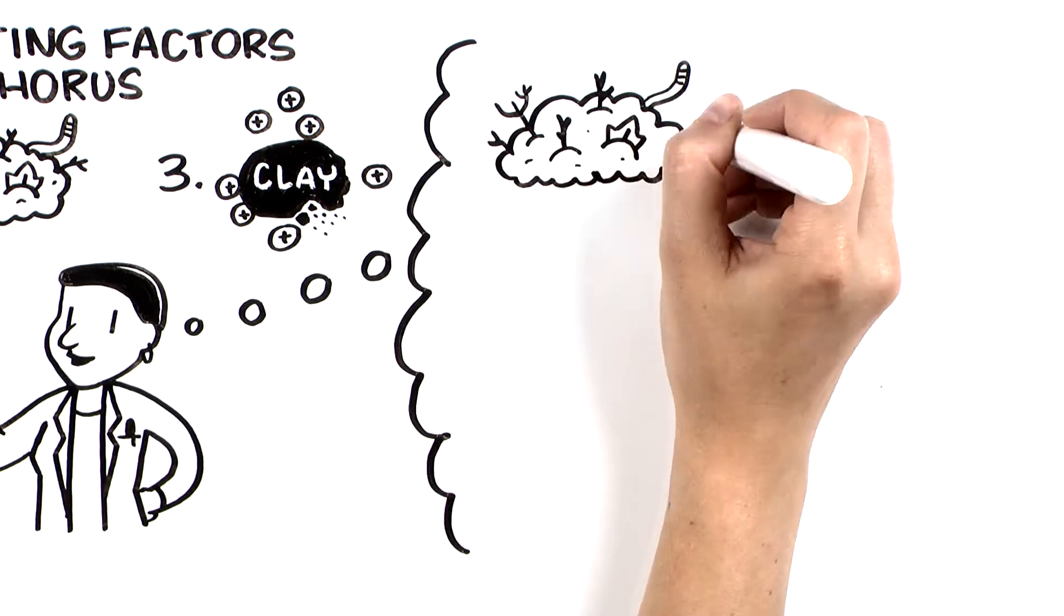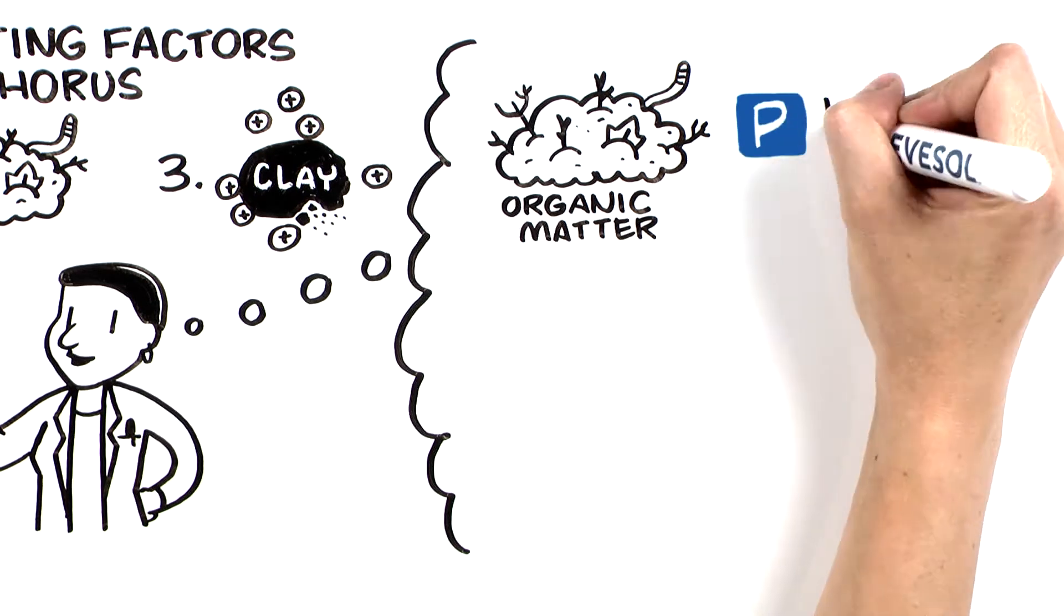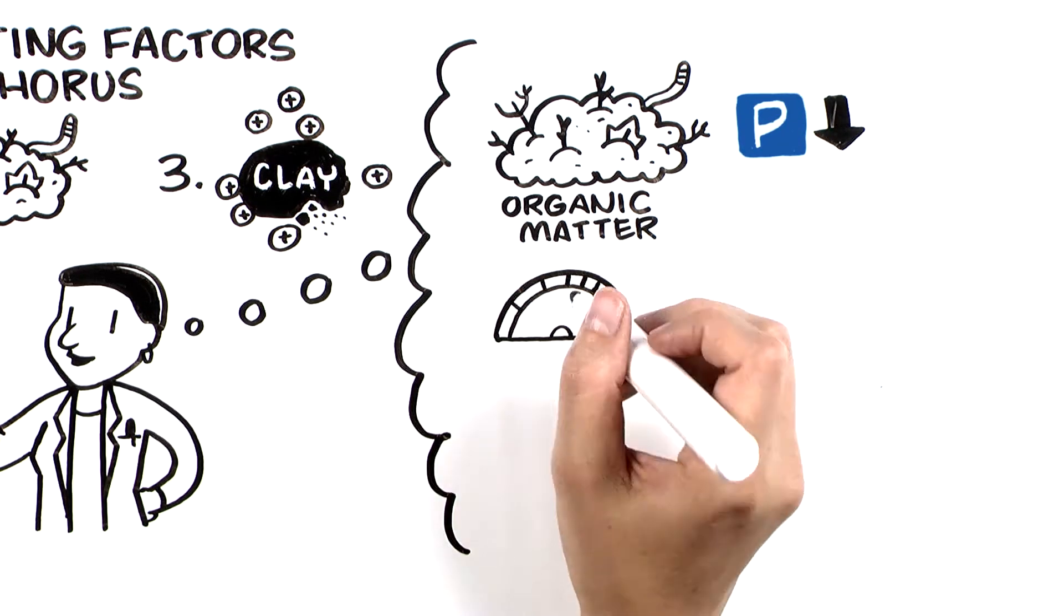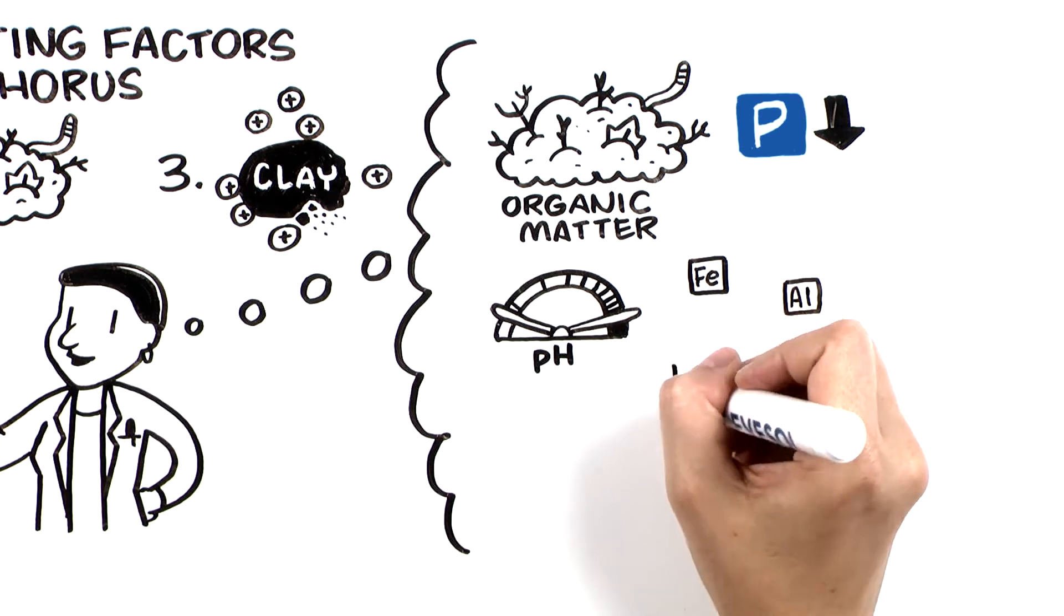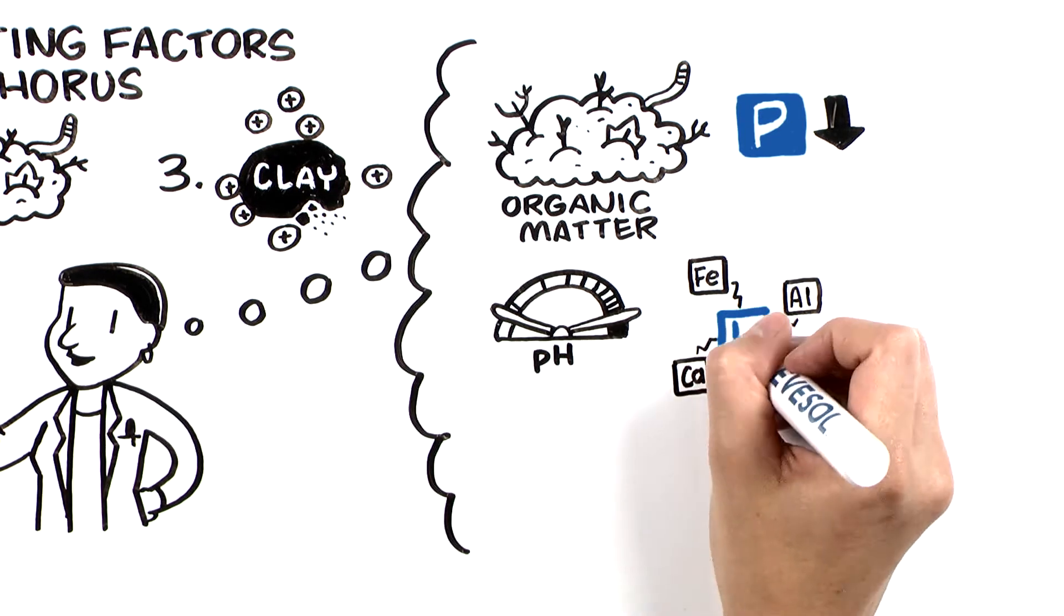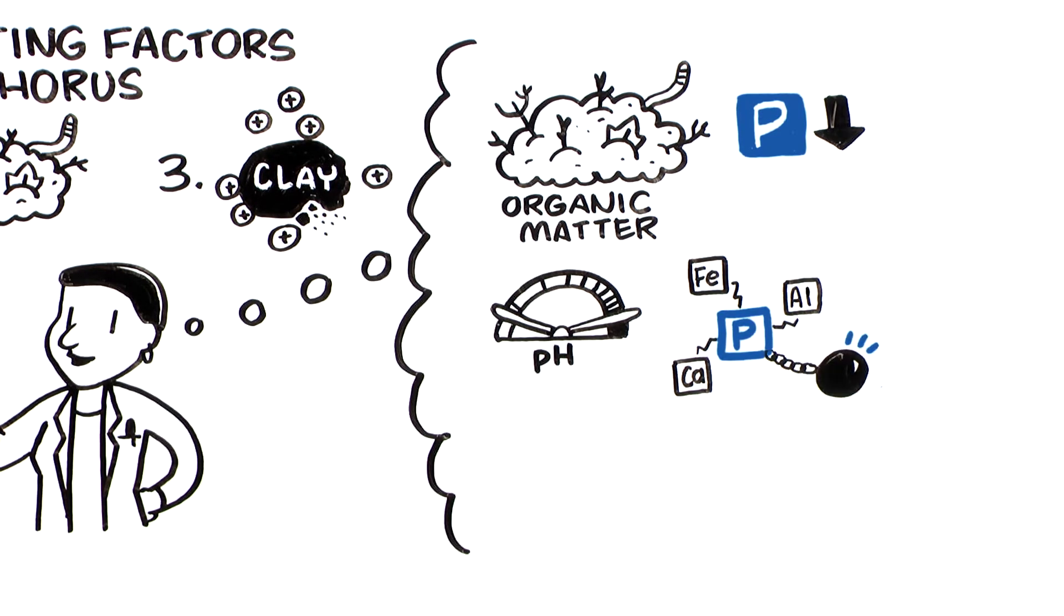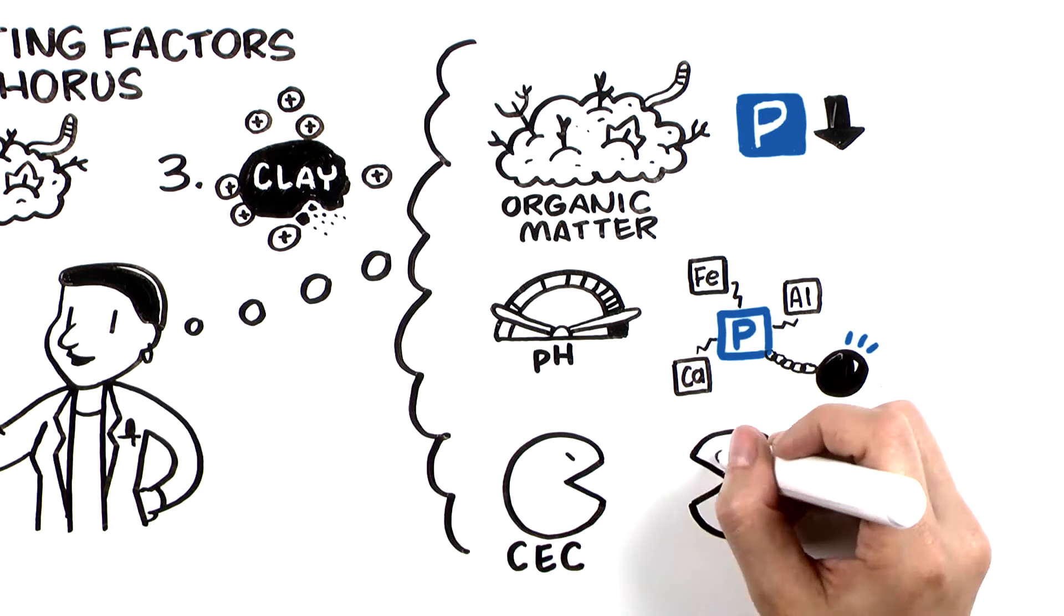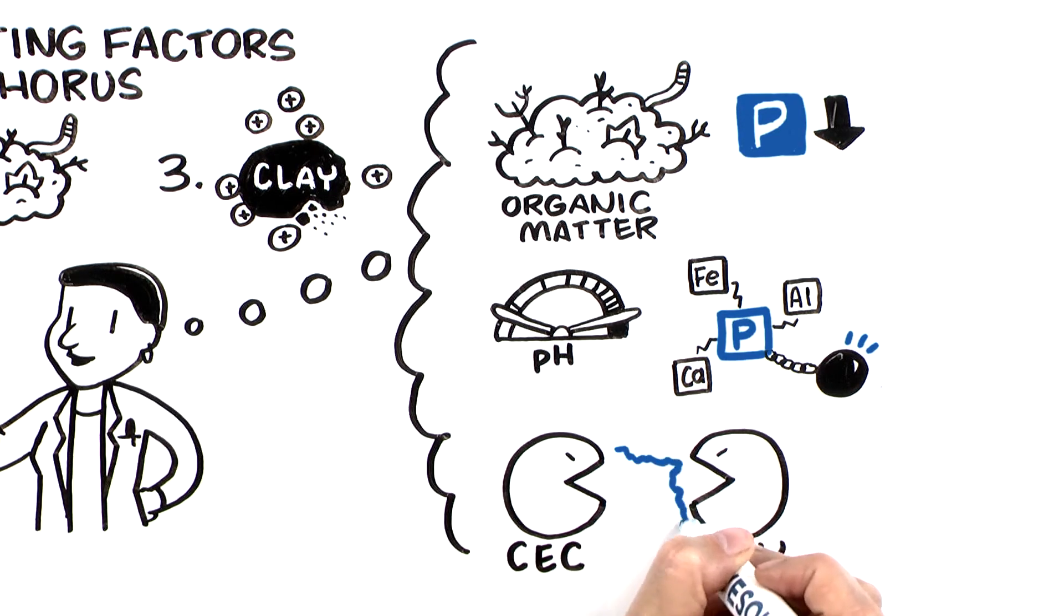Organic matter levels that are low can limit the rate of phosphorus supply. Soil pH that is too high or too low affects how iron, aluminum, and calcium react with phosphorus, which causes nutrient tie-up. And high CEC and clay content also supply cations that scavenge added phosphorus, making it unavailable.